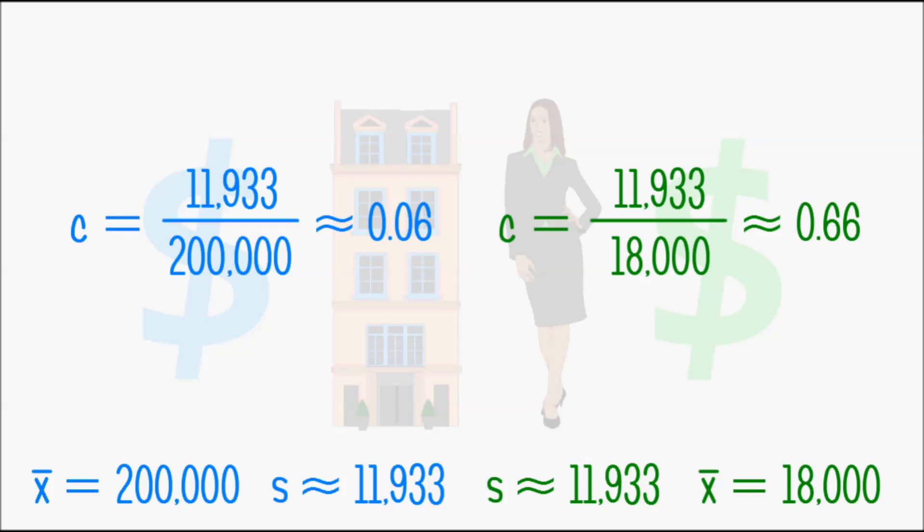The interpretation would be the average variability of revenues in Patrick's agency is around 6% of the mean, for Anna's business it is around 66% of the mean revenue. The coefficient of variation is therefore also a simple risk measure.